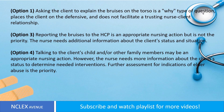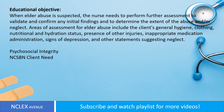Option 3: Reporting the bruises to the health care provider is an appropriate nursing action but is not the priority — the nurse needs additional information about the client's status and situation. Option 4: Talking to the client's child and/or other family members may be an appropriate nursing action; however, the nurse needs more information about the client's status to determine needed interventions. Further assessment for indications of elder abuse is the priority.